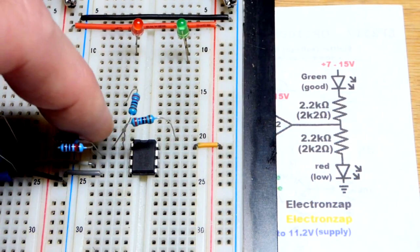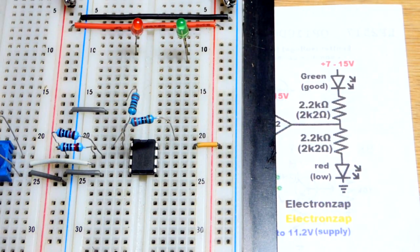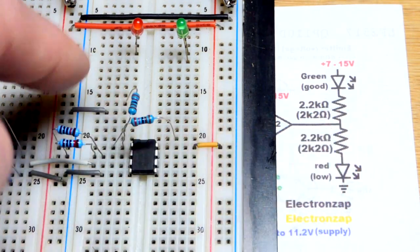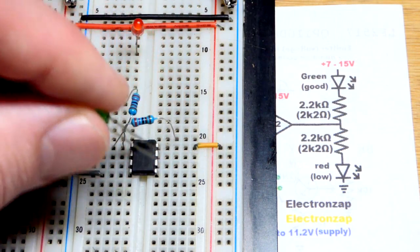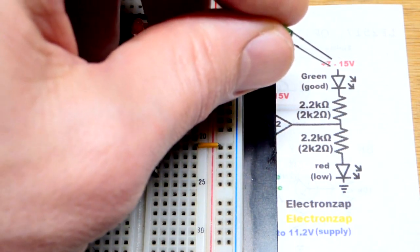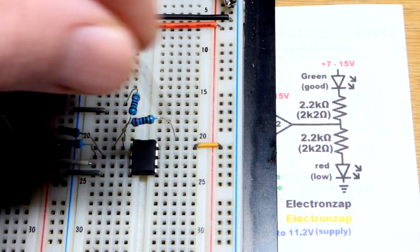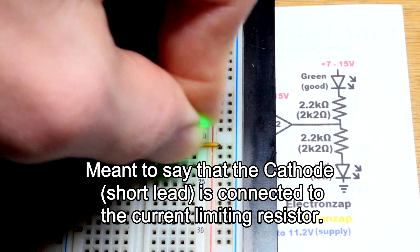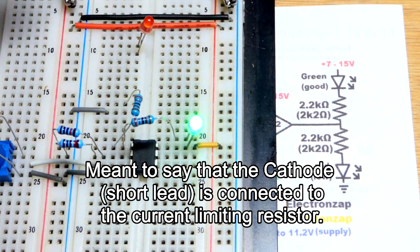Now we have a couple of 2.2 kilo ohm, 2200 ohm resistors come in from the output. They're one spot away from these two jumpers. We're going to take the green LED, make sure we put the long lead, the anode, to the orange jumper that goes to the positive supply. The short lead, the cathode, going to the green LED. And apparently I already have the power applied because it is lit up now.